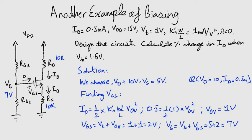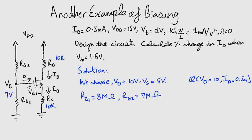Now it becomes easy to find RG1 and RG2. We choose a simple voltage divider and find that RG1 equals 8 mega ohms and RG2 equals 7 mega ohms.